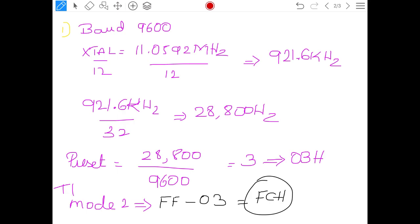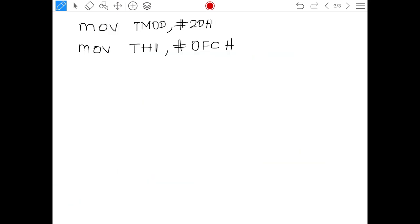Move TMOD as 20H. Why 20H it is discussed in the other video, please do refer if you have any doubt. And just now we calculated the preset value that I am loading to timer 1 higher byte. What is the value? 0FCH, just now we calculated here, that I am loading into TH.